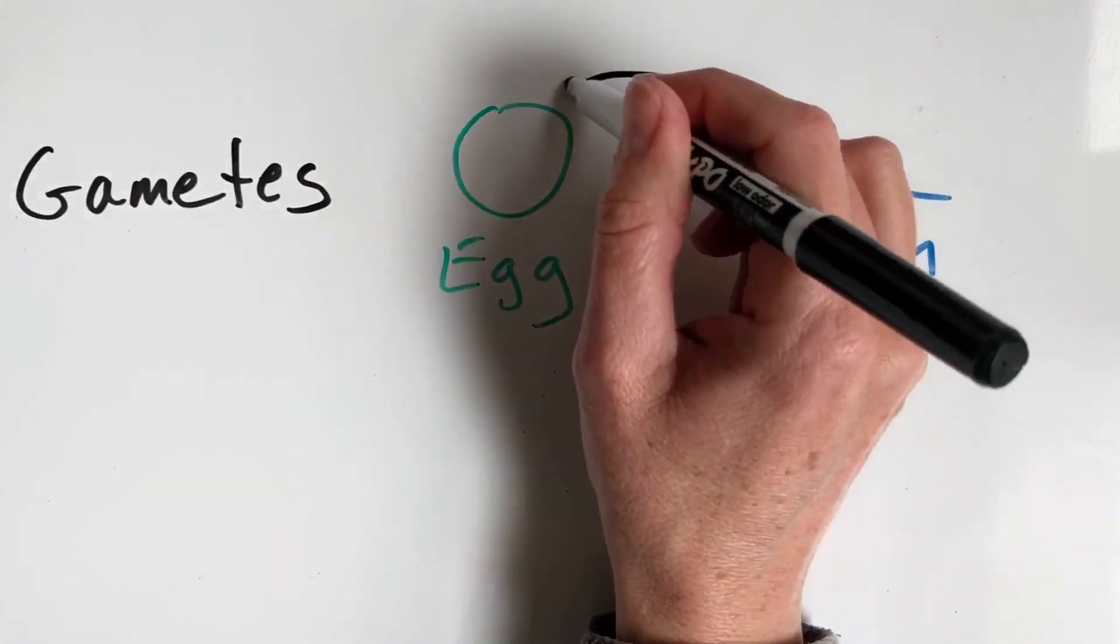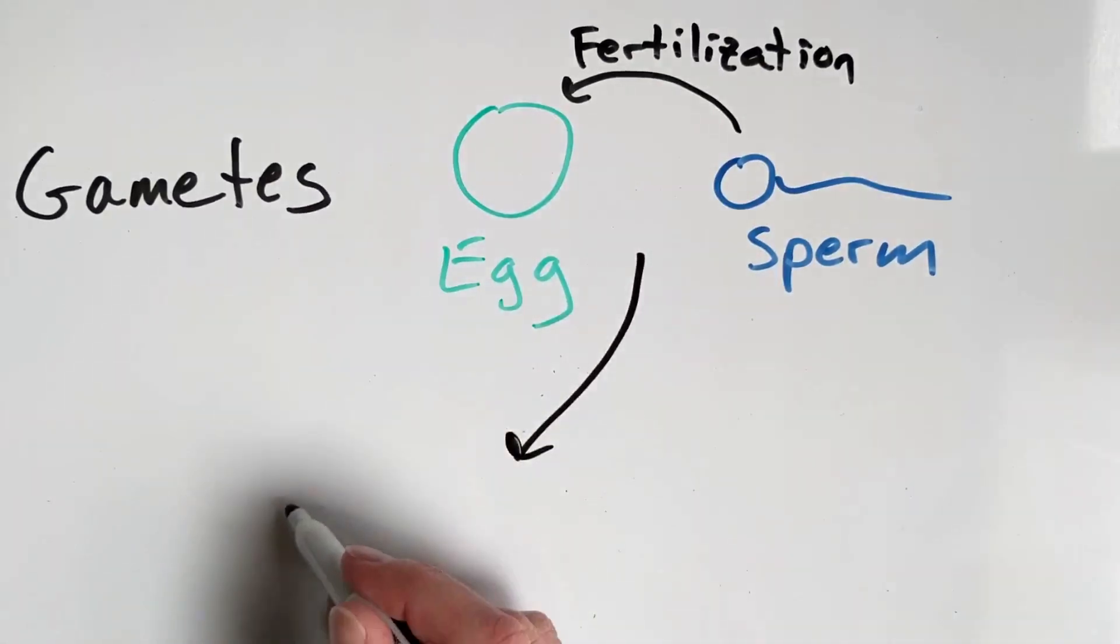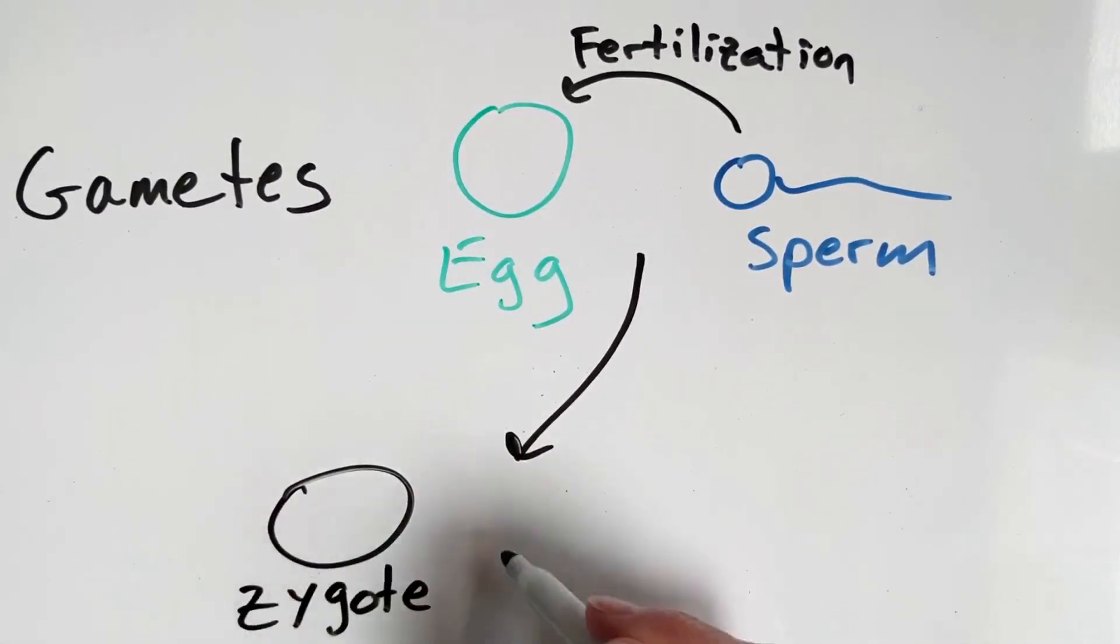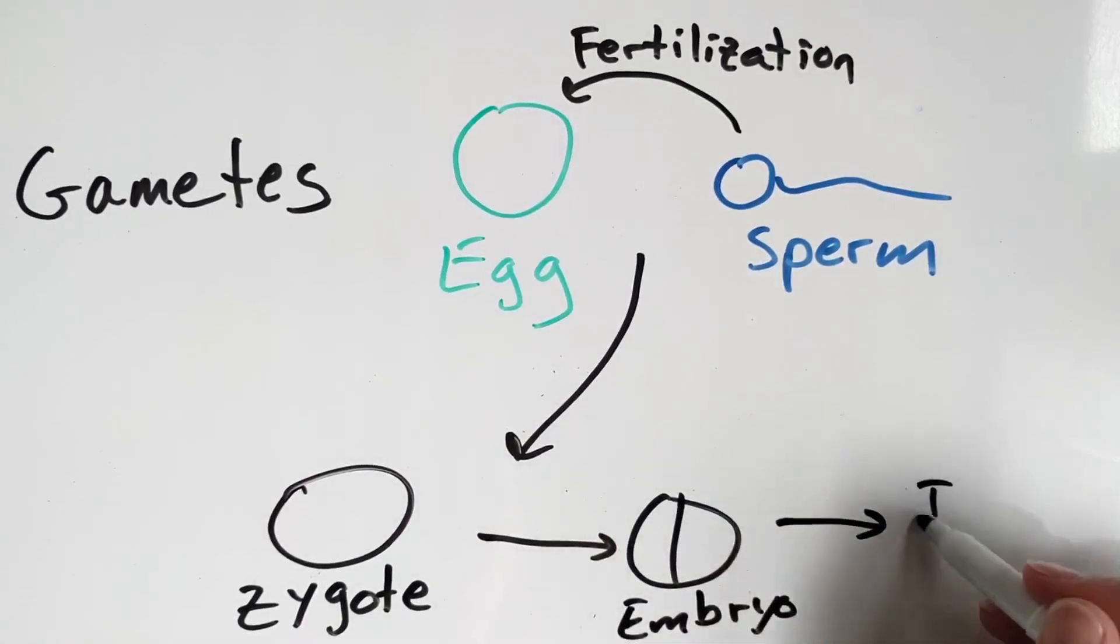One sperm fertilizes one egg in the fallopian tube, resulting in formation of a zygote that has genetic material from both parents. The zygote divides and becomes an embryo that will travel to the uterus where it implants into the endometrium and grows for the next nine months.